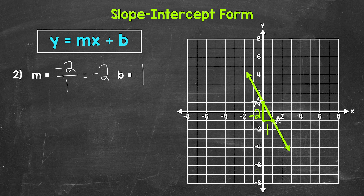Now all we need to do is write our equation. We plug in negative 2 for m and 1 for b. So y equals negative 2x plus 1. And we're done — that's our equation for that line.